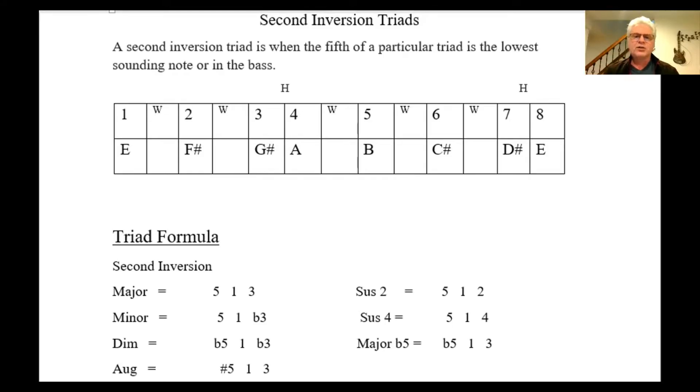A second inversion triad is when the fifth of a particular triad is the lowest sounding note, or in other words, in the bass. In our examples, we're going to use E as a root note for all our triads. So let's first review what an E major scale is.